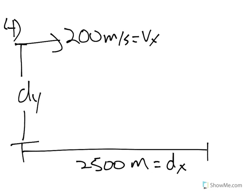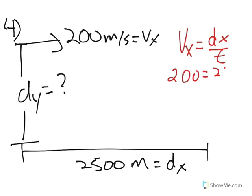Number four, a bomber is flying horizontally at 200 meters per second — that's your velocity in the x. It lets go of its bombs 2500 meters in advance of the target, that's dx, and you're looking for dy. But in order to find dy, you have to find the time. We use vx equals dx over t to find the time: 200 equals 2500 over t, so t is equal to 12.5 seconds.